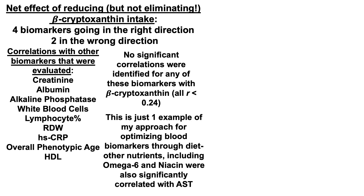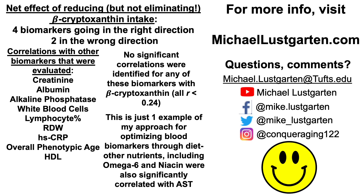This is just one example of my approach for optimizing blood biomarkers through diet. There were other nutrients too, including omega-6 and niacin, that were significantly correlated with AST — but in the interest of time I won't go through that today. For my next blood test next week, at some point I'll do an AST update video and include only the dietary data, without having to re-present the all-cause mortality data since I've already shown that. Thanks for watching, and I hope you enjoyed the video.